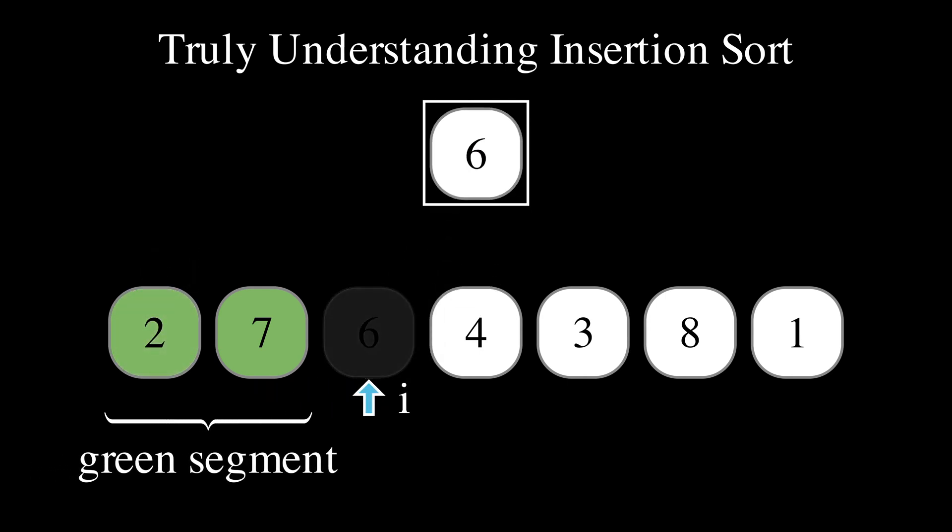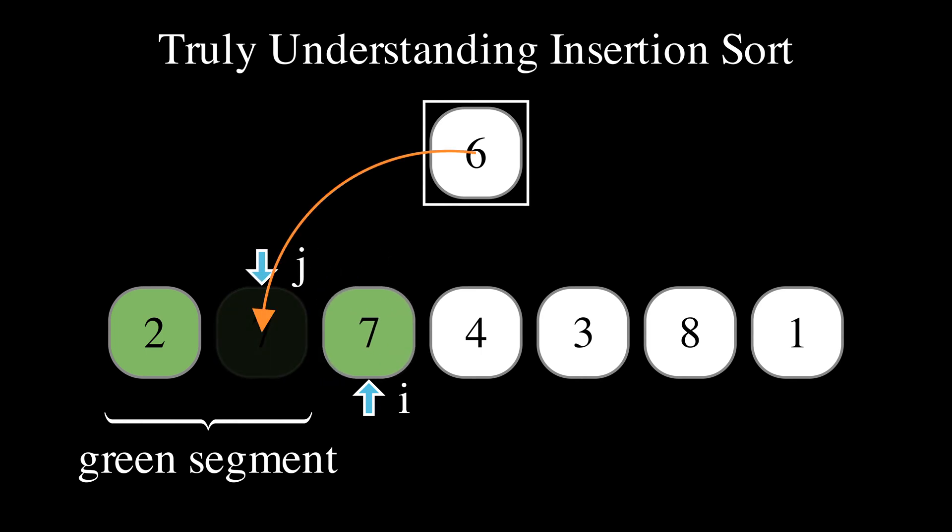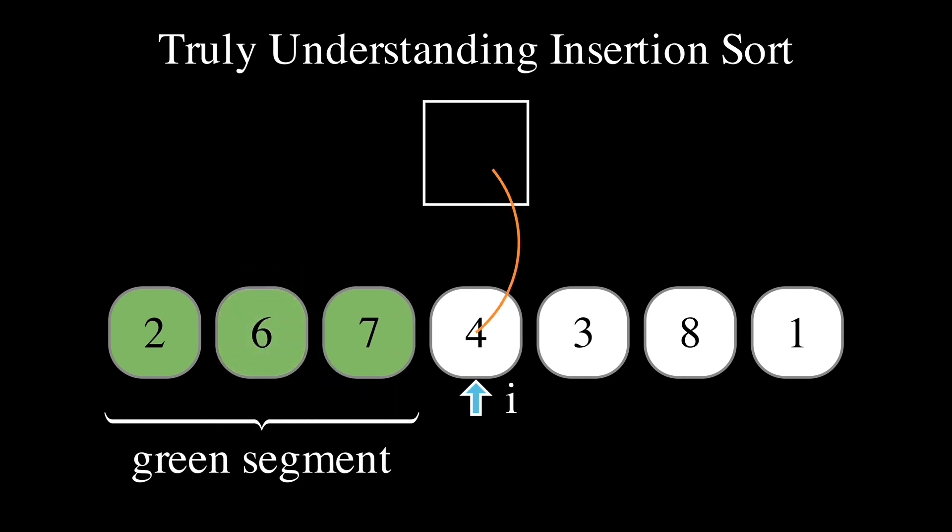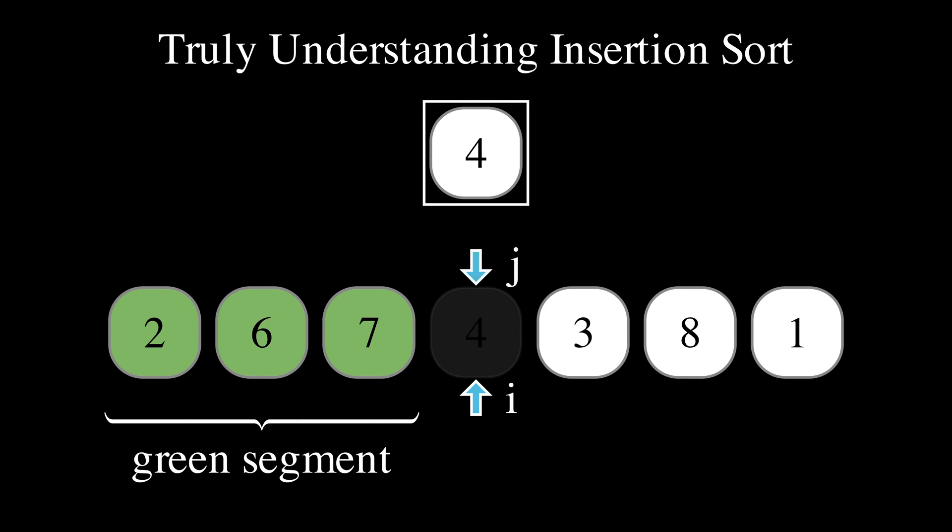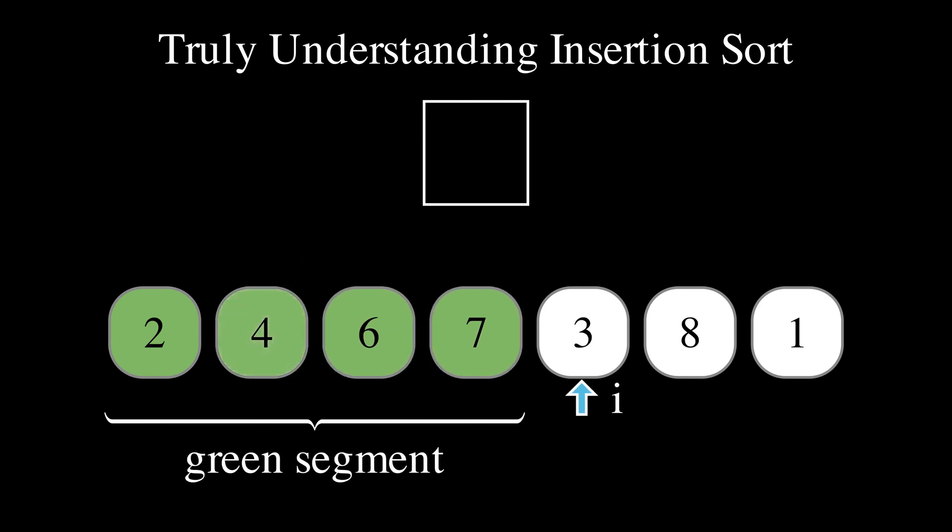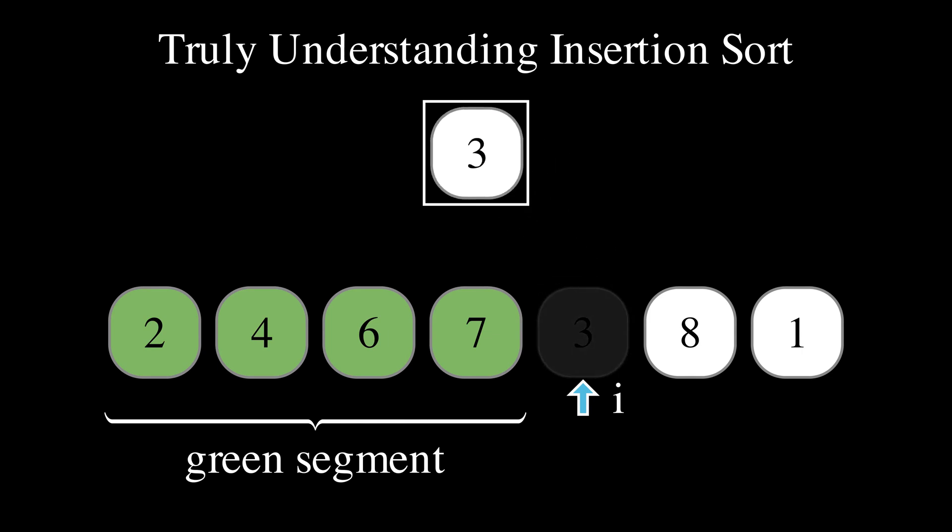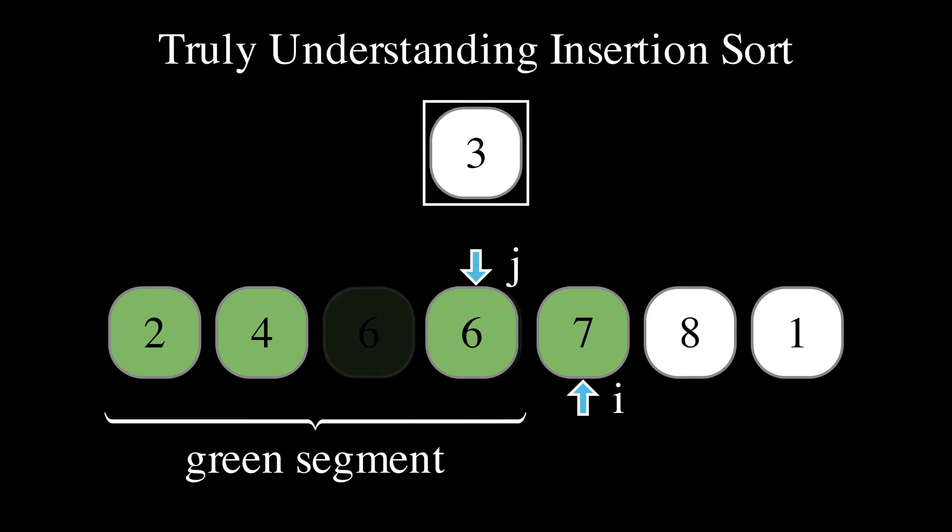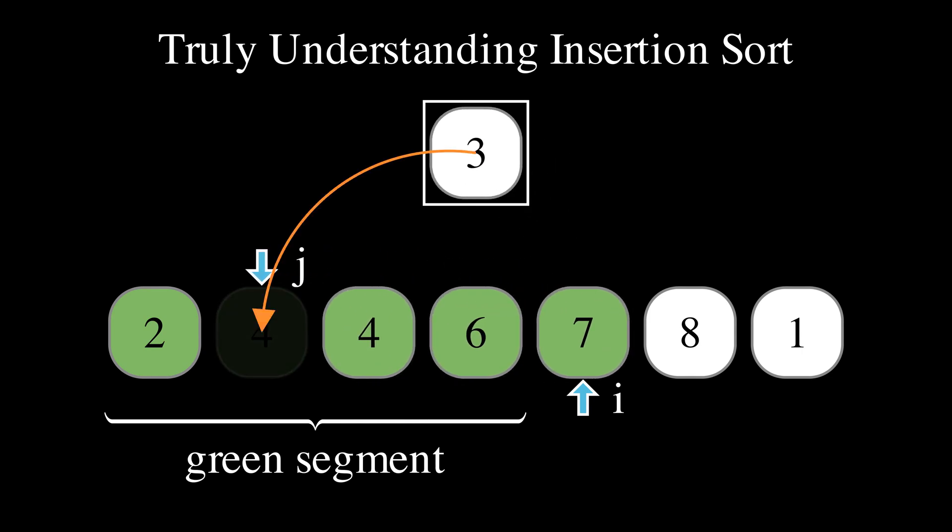Store 6 into the temporary location, shift 7 towards the right, insert 6 back into the array. Store 4 into the temporary location, shift 7 and 6 towards the right. Insert 4 back into the array. Store 3 into the temporary location, shift 7, 6, and 4 towards the right.